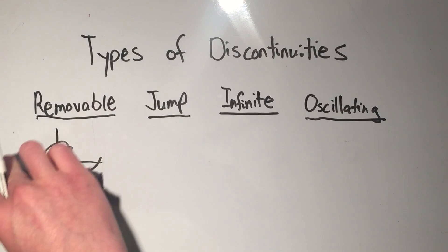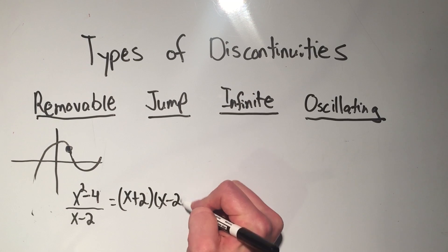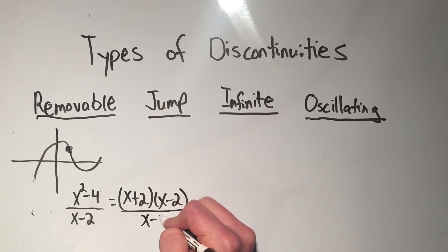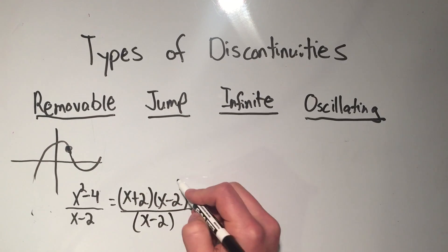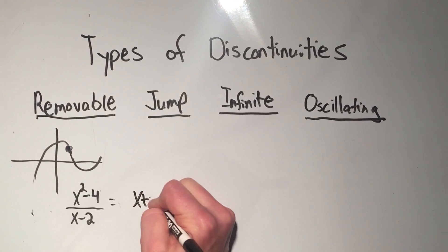But the thing is, if I factor that, if I factor the numerator, that's a difference of squares. It factors into x plus 2, x minus 2. And I can cancel those x minus 2's. And I'm just left with the function x plus 2.